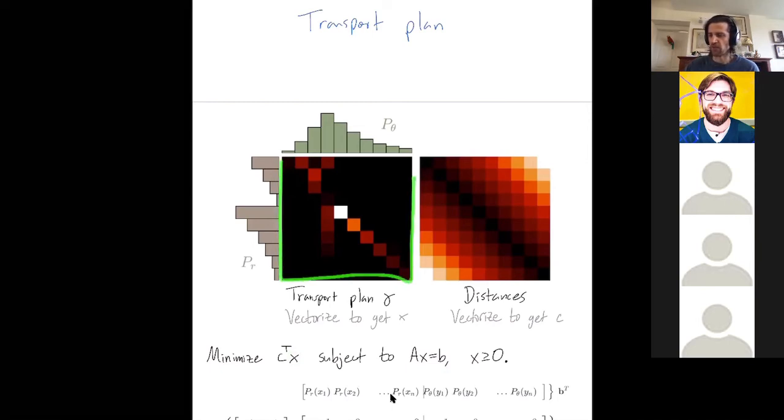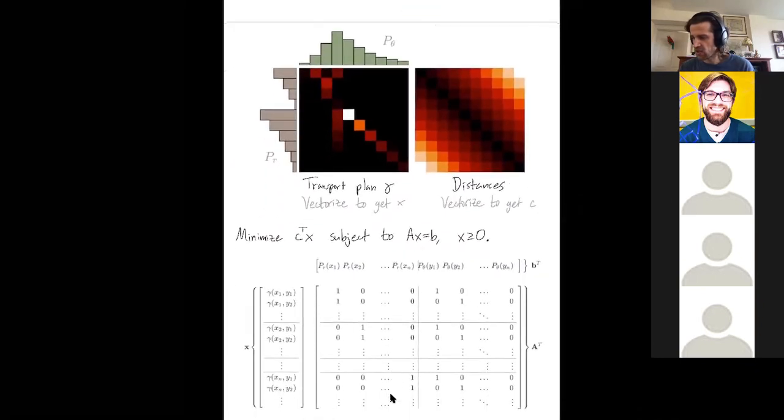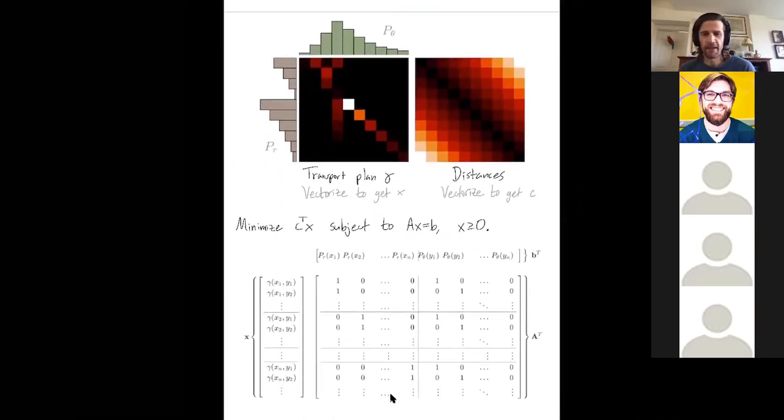But we need constraints on our transport plan. And these constraints are going to encode that our transport plan actually has to be a joint probability density function with marginals R and theta. So here's a nice schematic showing you that in this problem, our matrix is A, but they've just written down A transpose, because it's a little easier to look at. But here is our vector of variables, x, and gamma x_i, y_j is just telling you how much mass is being moved from a point in R to a point in theta.